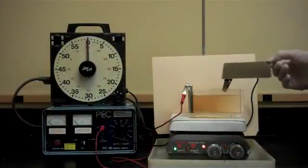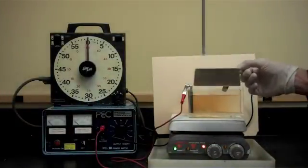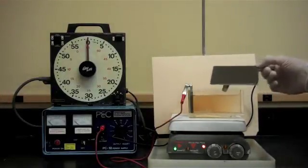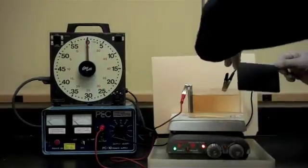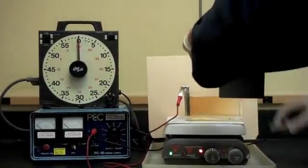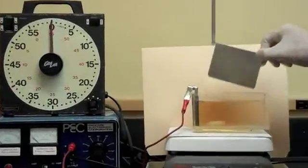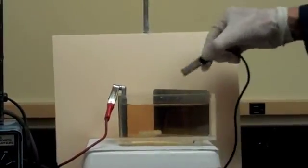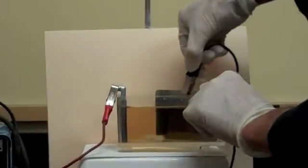Okay, here is our Hull Cell test panel which has been stripped of the zinc coating, and we are now ready to start this test. So we will take the panel and put it into the angled portion of the Hull Cell, and we are going to connect the negative lead to the test panel.